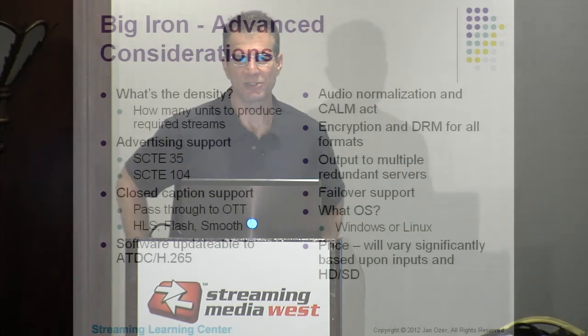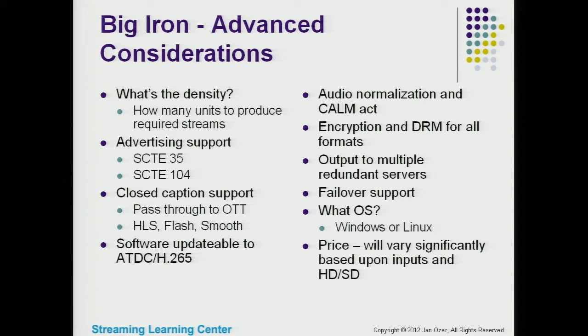If I'm narrowing down in this category, the first question is density: how many units do I need to produce the streams I require? Elemental does a nice job with GPU and CPU encoding and tends to produce units that output a lot of streams. You may need to buy two or three Elemental Live encoders compared to four or five from somebody else — which is a consideration for purchase price and operating costs.